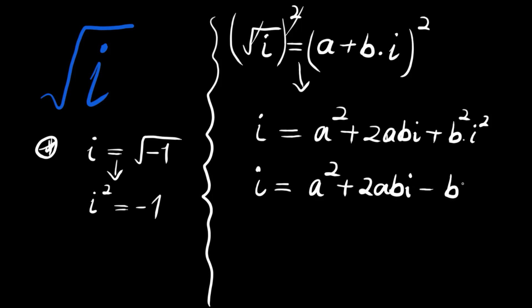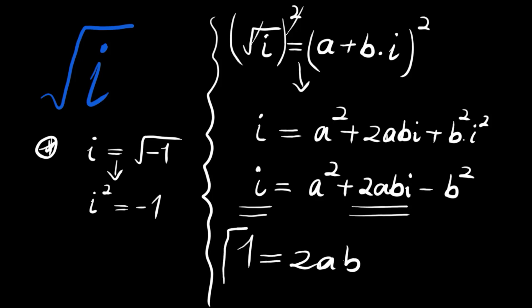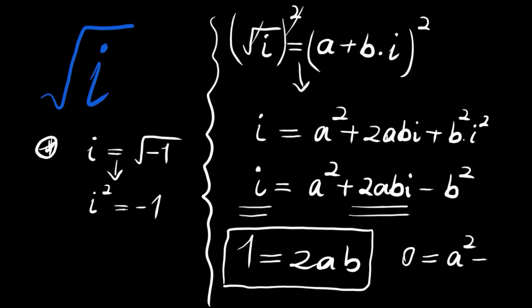Now remember we said i squared equals minus one, so i equals a squared plus 2abi minus b squared. From here we get two equalities: the coefficients of the i terms must be equal, giving us 1 equals 2ab, and the constant terms must also be equal.